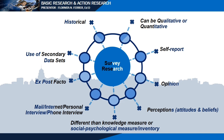In ex post facto research, the researcher is not allowed to interfere with what is happening in the study. Another design is the use of secondary data sets, where data has been collected through primary sources and made available to researchers. Secondary data means you will be consulting books or other printed materials as source of your data. Then there is the historical design, done by analyzing past events from which the researcher develops present concepts and conclusions.